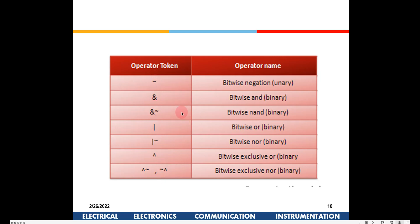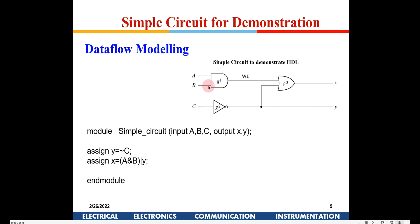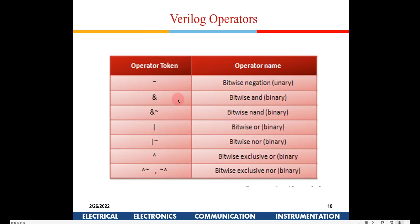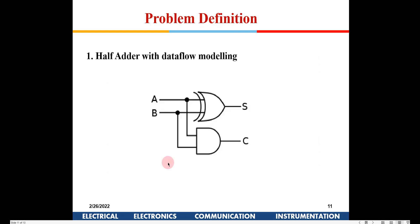Some Verilog operators include: tilde for bitwise negation, ampersand for bitwise AND — where if A and B are four-bit data, each corresponding bit is ANDed. There is also NAND, XOR, XNOR, and all these operators are available in the Verilog library. You can download the operator list for reference.